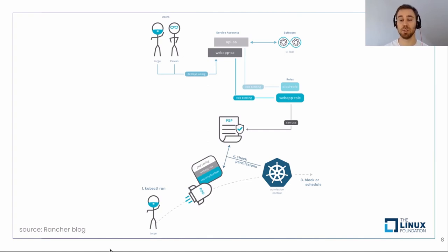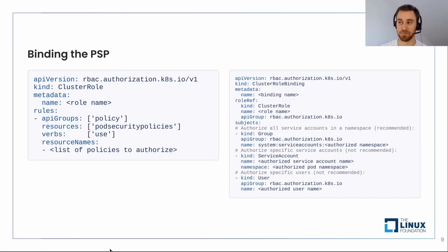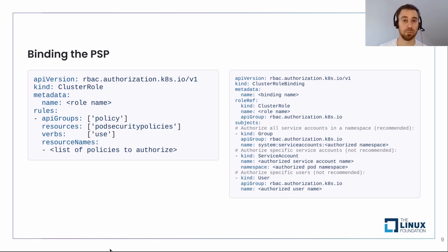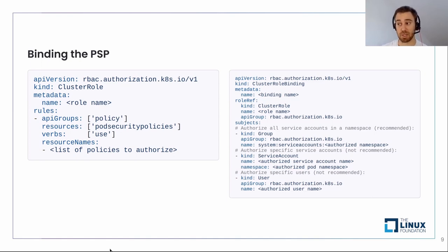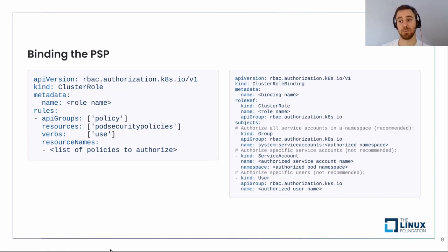In YAML, you first create the ClusterRole, defining rules for pod security policies and listing which PSPs can be used. Once you have this ClusterRole, you create the ClusterRoleBinding and bind it to whatever you want — a specific user like Jorge, a specific service account, or all service accounts in the namespace. Binding to all service accounts in the namespace is what's recommended, because it allows for an easy transition out of PSPs into other things.